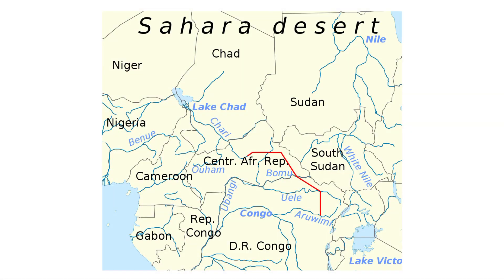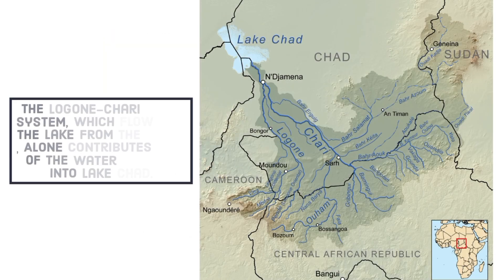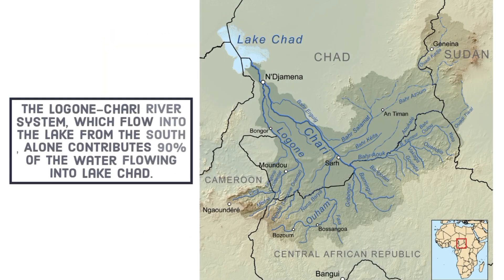The main rivers that flow into Lake Chad are the Shari, Laguan, and Kamadugu Yob rivers. The Laganshari River system, which flows into the lake from the south, alone contributes 90% of the water flowing into Lake Chad.